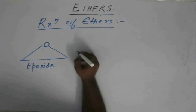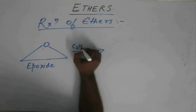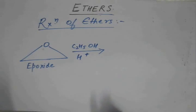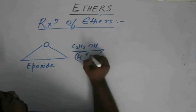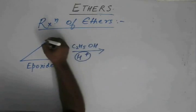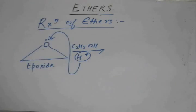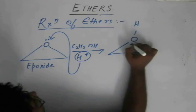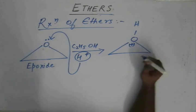When this reacts with C2H5OH in presence of an acid, what happens? Let's see. We have H+ in the system. H+ is attracted towards the electrons of oxygen, so it attacks oxygen. Now we are left with a positive charge on the oxygen atom. The positive charge on the oxygen atom is not stable.